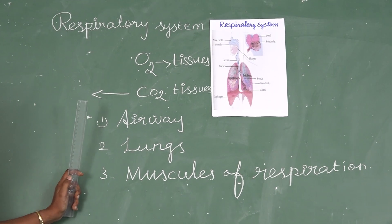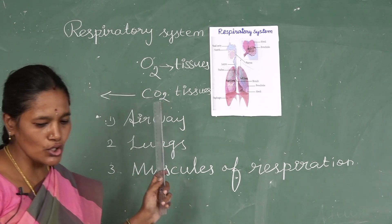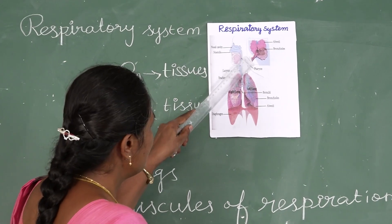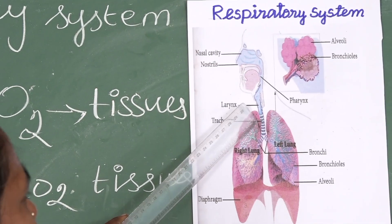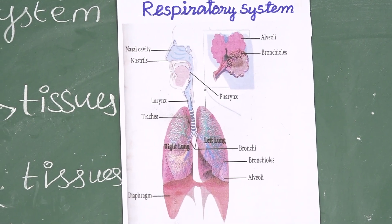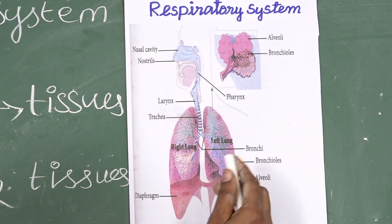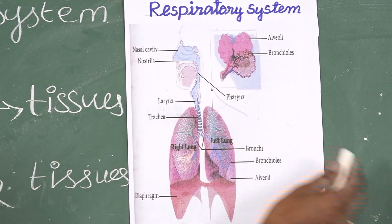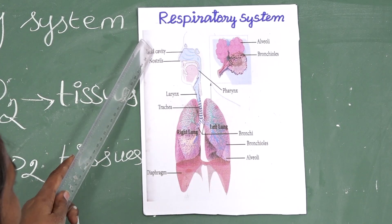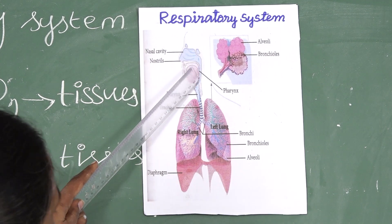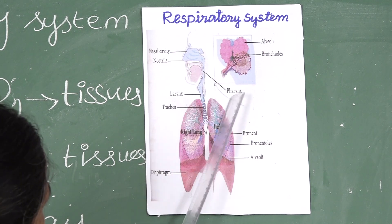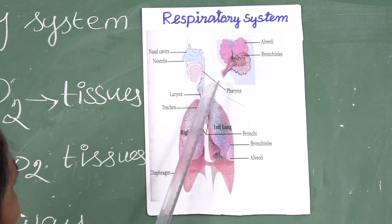The first part is the airways. The airways include the nasal cavity, nostrils, pharynx, larynx, and trachea. They carry oxygen between the lungs and the surroundings. The air travels from the nostrils through the nasal cavity, pharynx, larynx, and trachea to the lungs.